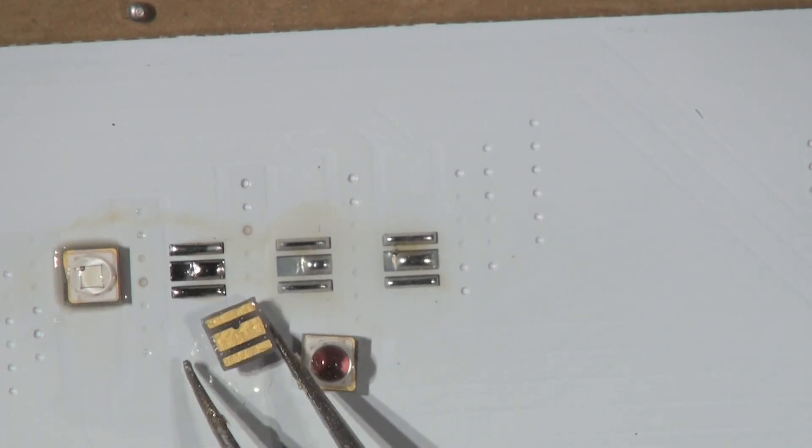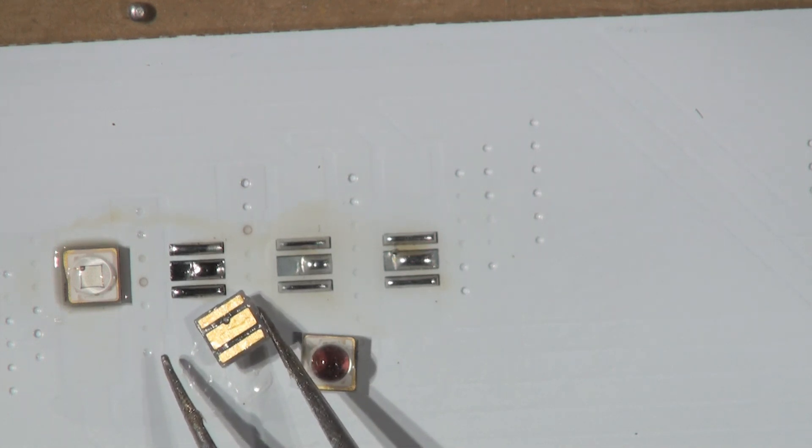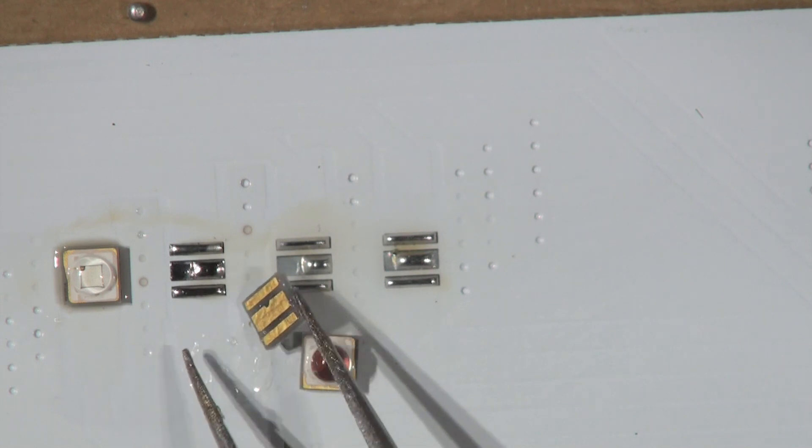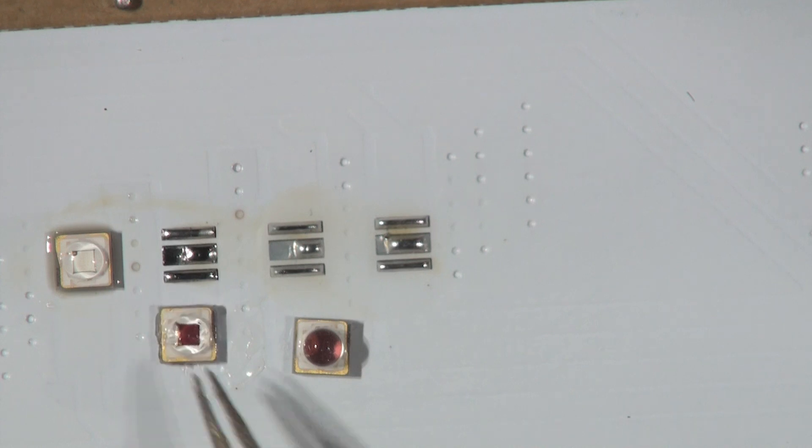You can see it's got three little strips, and the central one is not connected to anything, but it's a heat sink, a heat transmission pad. You see there's a little dink in there, and I know on this one it needs to go that way up.